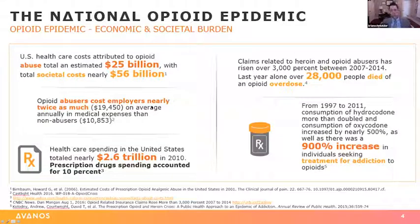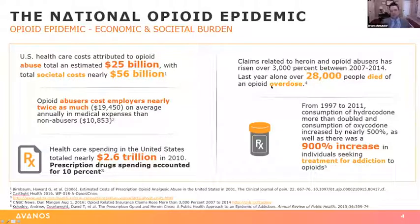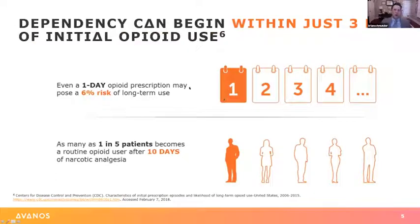Opioid abusers cost employers more money per year than non-opioid abusers. U.S. healthcare spending is now about $3.3 trillion, and 10% is spent on prescription drugs, a huge portion of that on opioids. From 1997 to 2011, consumption of hydrocodone doubled and oxycodone increased nearly 500 times, with a 900% increase in individuals seeking treatment for addiction. The United States uses somewhere between 95% and 100% of the world's hydrocodone and oxycodone. Even a one-day opioid prescription poses a 6% risk of long-term use. 20% of patients become routine opioid abusers after 10 days, and between 1% and 3% of people who receive even one perioperative opioid dose can go on to long-term opioid use.